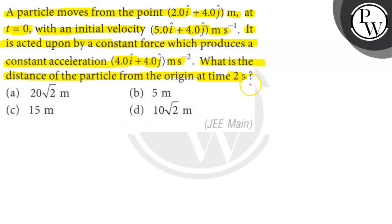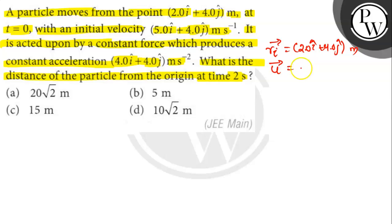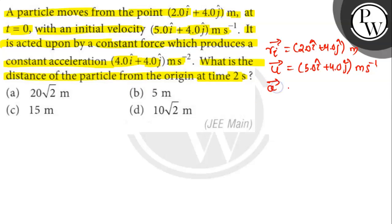In the question, we are given the initial position vector of the particle at t equals 0 as ri vector equals 2.0 i cap plus 4.0 j cap meter. The initial velocity of the particle is given as u vector equals 5.0 i cap plus 4.0 j cap meter per second. A constant force is also being exerted on the particle. The constant acceleration produced by the force is given as a vector equals 4.0 i cap plus 4.0 j cap meter per second square.